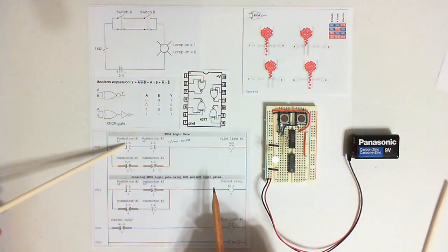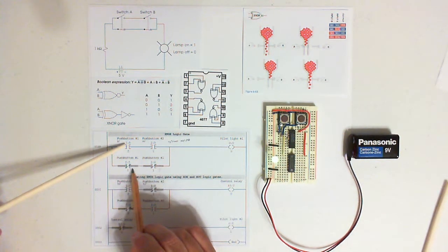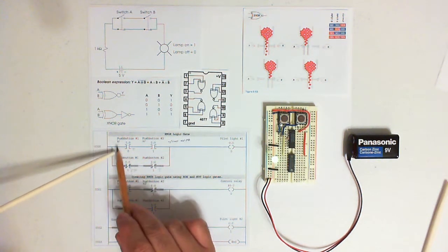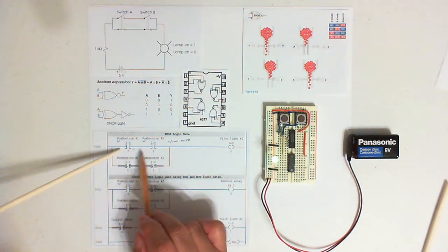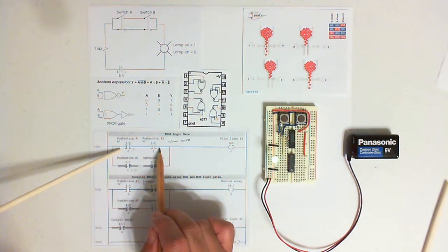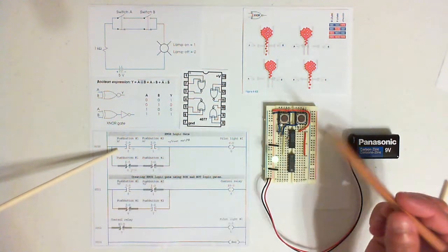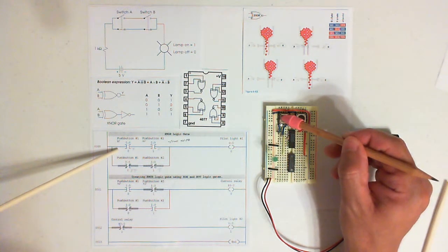When you push push button 1, this will turn to true. This will become false, turning off the lamp. And this right here is false, by the way. So that's why the lamp will turn off if you push push button 1.